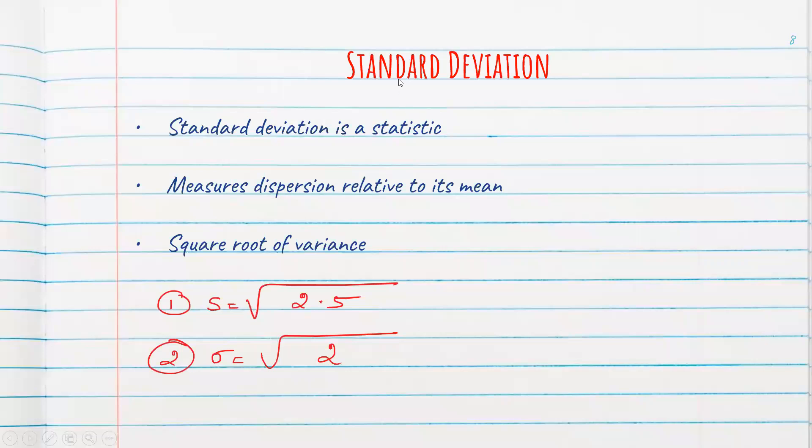So the next one is about standard deviation. What is meant by standard deviation? Standard deviation is the statistic which measures dispersion relative to its mean. So which is nothing but the square root of variance. So if you take the first problem there, we got the variance as 2.5. So standard deviation is equal to square root of 2.5.